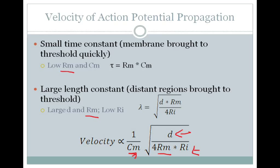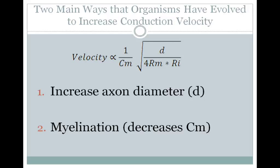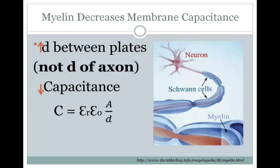Organisms have evolved two main ways to increase conduction velocity. The first is to increase axon diameter, and the second is to increase myelination, which decreases membrane capacitance. Myelin essentially adds on to the cell membrane. You have either Schwann cells or oligodendrocytes that wrap around the axon, with nodes in between. This myelin increases the distance between the plates, or basically from inside the cell and outside the cell.